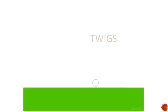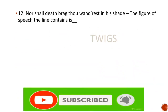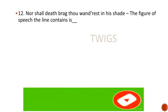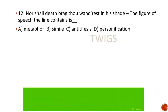MCQ number 12: 'Nor shall death brag thou wanderest in his shade' — the figure of speech the line contains is: metaphor, simile, antithesis, personification. Here the right answer is option D, personification. Personification is the figure of speech where the qualities of human beings are attributed to inanimate objects, treating them as if they were human beings — they can act and do just as a human being does. So attribution of human qualities to an inanimate object is personification.